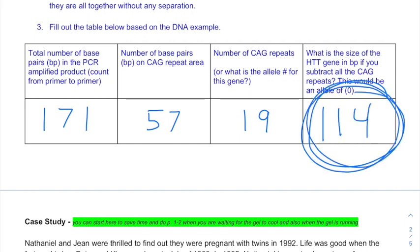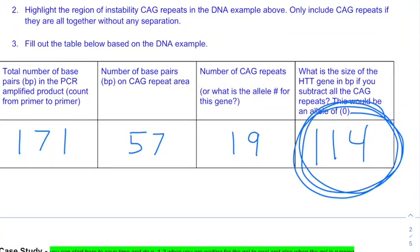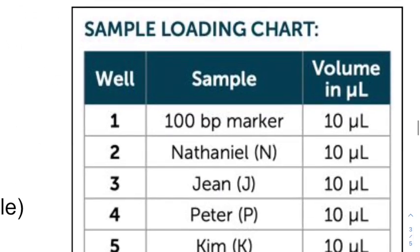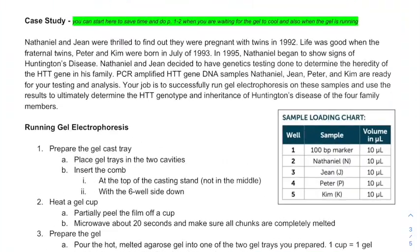We're going to need to know that when we analyze the DNA sections from Nathaniel, Gene, Peter, and Kim. We need to know that if they didn't have any CAG repeats, they would have 114 base pairs in their PCR amplified region. So we're going to take whatever size DNA fragments they have, subtract 114 to figure out how many C's, A's, and G's they have, and then divide by three to get how many repeats are in there. Next, you'll see me running the gel. I'll be placing samples according to the sample loading chart: lane one will have the marker, and lanes two through five will have Nathaniel, Gene, Peter, and Kim's PCR amplified region of the HTT gene. After that, we'll go through the results of what the gel electrophoresis results would look like.